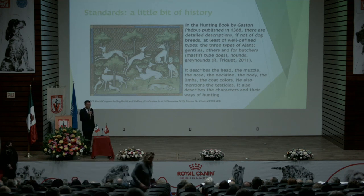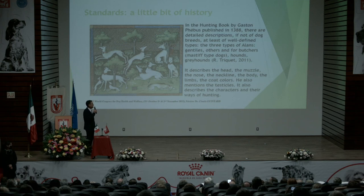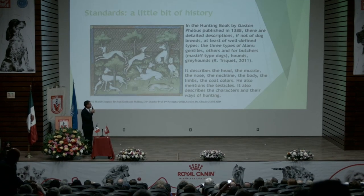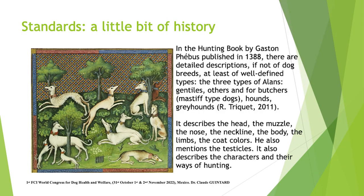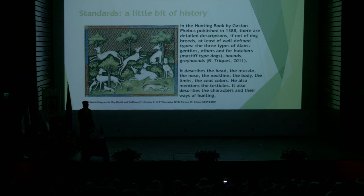A short history about standards: in the antique book by Gaston Phoebus, published at the end of the 14th century, there are detailed descriptions — if not of adult breeds, at least of well-defined types. He described the head, the muzzle, the nose, the neckline, the body, the limbs, the coat colors. He also mentioned the testicles, and described the characters and their ways of hunting.